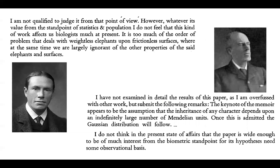Reginald Punnett and Karl Pearson were invited to review it. The paper was heavy on math, and from Punnett's perspective too theoretical, as he commented that it dealt with weightless elephants upon frictionless surfaces, where we are largely ignorant of the other properties of the said elephants and surfaces. Pearson's review was similarly dismissive, although while the paper was not rejected, it was withdrawn. It was published two years later in 1918 in the Transactions of the Royal Society of Edinburgh, and this paper continues to be cited today as one of the most influential papers in human genetics.